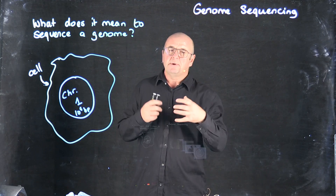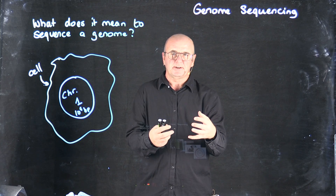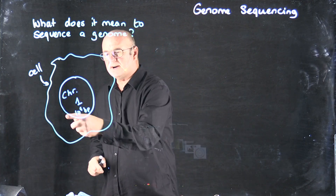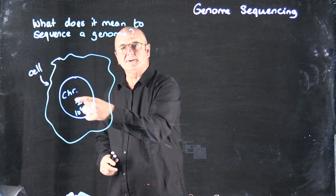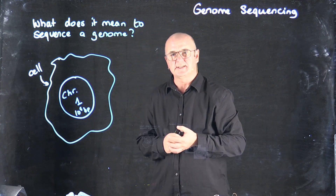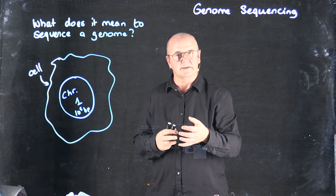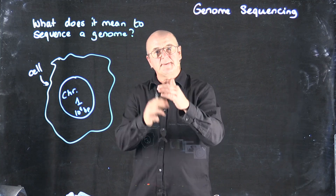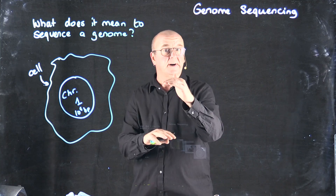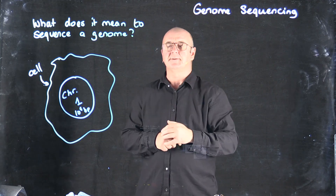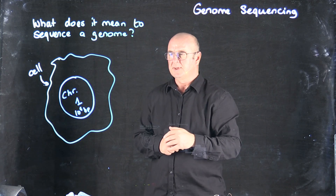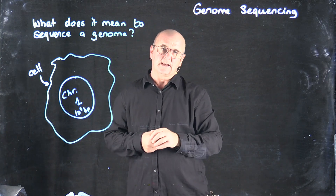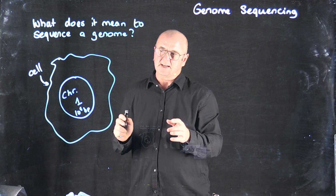What we mean when we talk about sequencing the genome is to identify the correct order of the A's and C's and G's and T's around that circle, and to end up with a file — a sequence file, like a FASTA file that we've talked about — where we have those bases laid out from end to end.